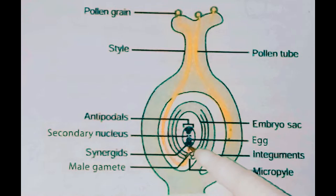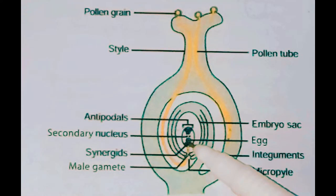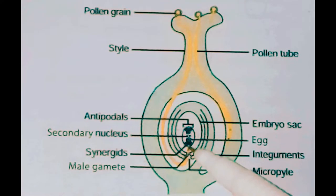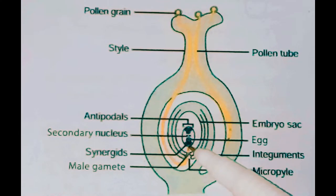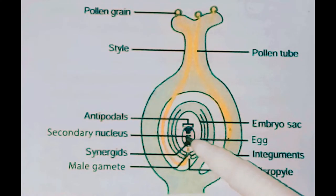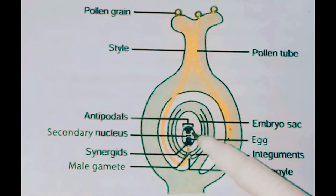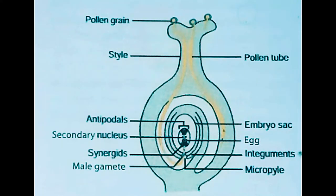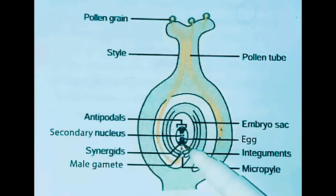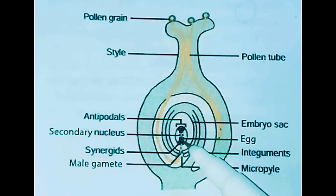The generative cell divides to form two sperm cells, called male gametes. The tip of the pollen tube bursts, releasing the two sperms to enter into the embryo sac of the ovule. One sperm will fuse with the egg — the egg is present in the egg apparatus between the synergids — and this process is called syngamy. Fusion of the sperm nucleus with the egg is called syngamy, and it forms a diploid zygote. This zygote will develop into the embryo. The other sperm fuses with the secondary nucleus — the two polar nuclei present in the center form the secondary nucleus. This fusion is called triple fusion, forming the primary endosperm nucleus, which is triploid in nature, having 3N.